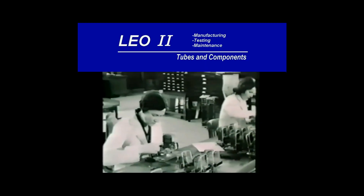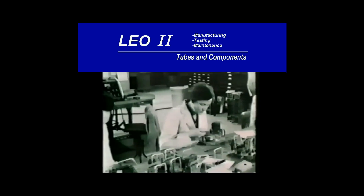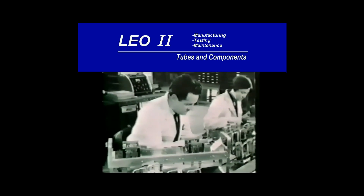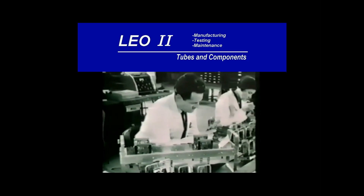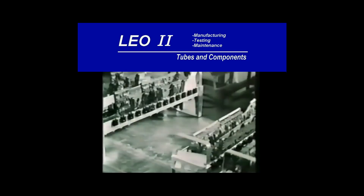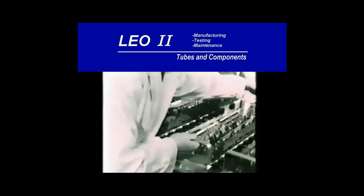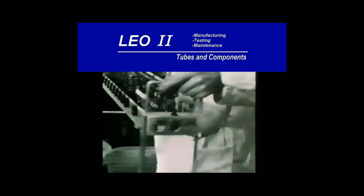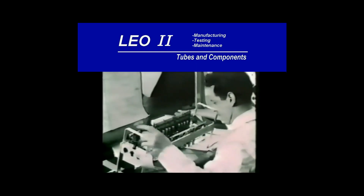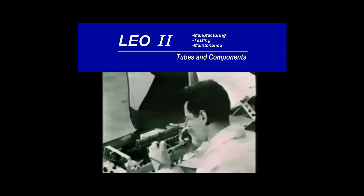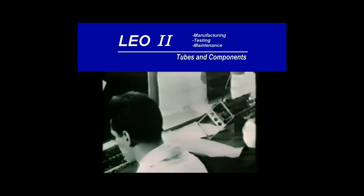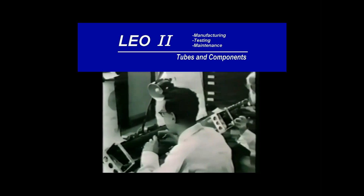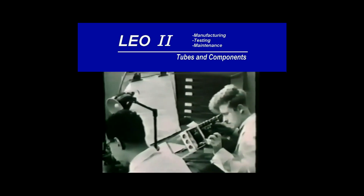The manufacture of the electronic circuits begins with small packages carrying a few valves, assembled by hand. Every soldered connection is inspected for good workmanship and freedom from dry joints. The packages are then incorporated into larger units. Each part has been checked mechanically and electrically before it goes into a new LEO.